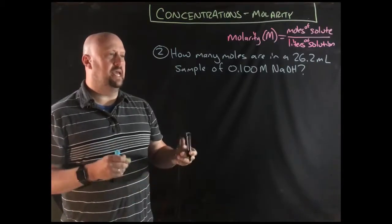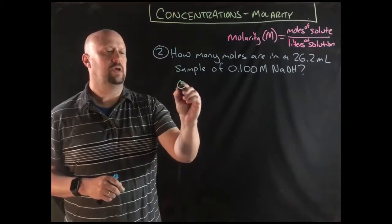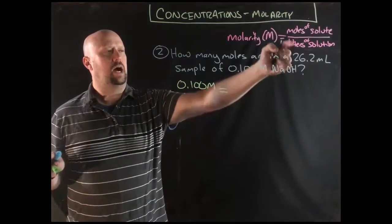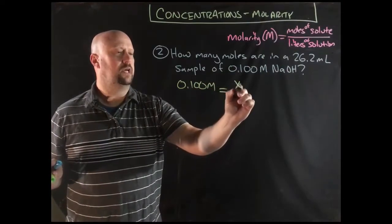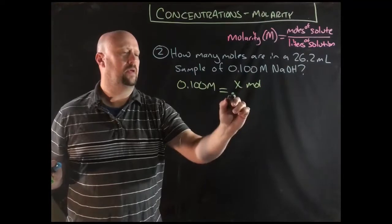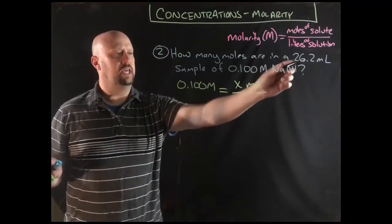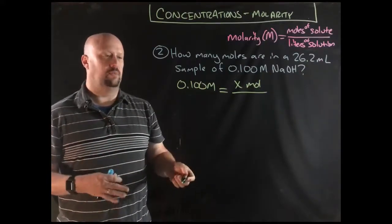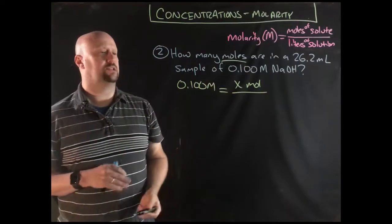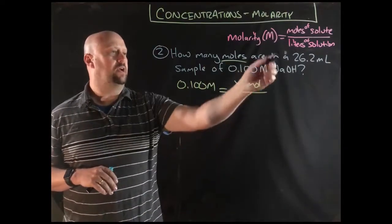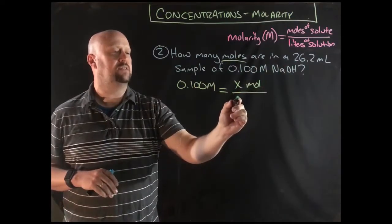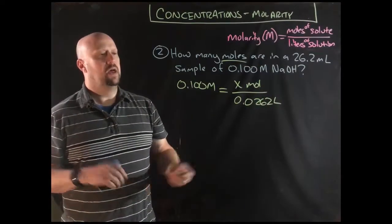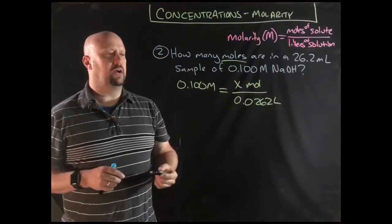Since we know the molarity and the volume, I'm going to go ahead and just set this up in equation form. That's my molarity. I am looking for moles, so I'm going to put x moles. I know the volume. Now, again, that volume is in milliliters. We can actually plug in milliliters and then we would just solve for millimoles instead of moles. But the problem specifically asks for moles. So, to get there then, we're going to convert that. One, two, three decimal places gives me 0.0262 liters.